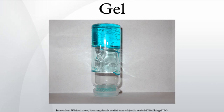An organogel is a non-crystalline, non-glassy thermoreversible solid material composed of a liquid organic phase entrapped in a three-dimensionally cross-linked network. The liquid can be, for example, an organic solvent, mineral oil, or vegetable oil. The solubility and particle dimensions of the structurant are important characteristics for the elastic properties and firmness of the organogel. Often, these systems are based on self-assembly of the structurant molecules.